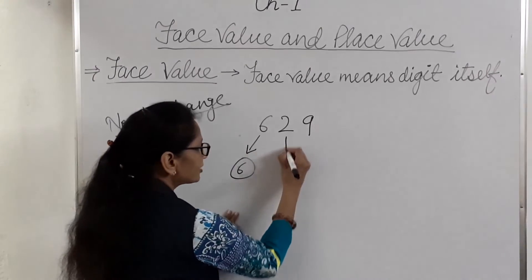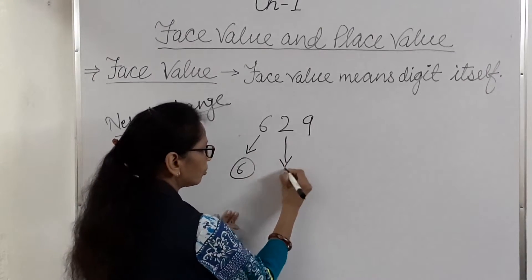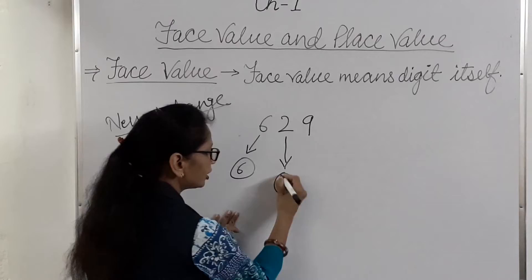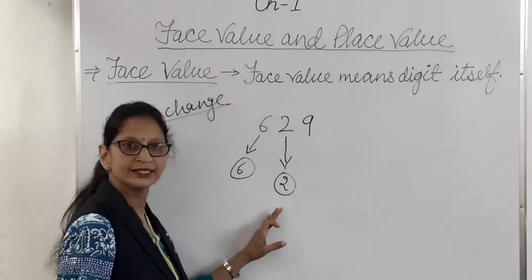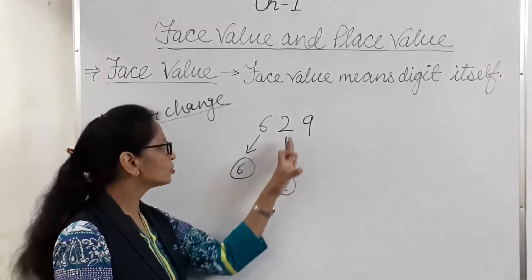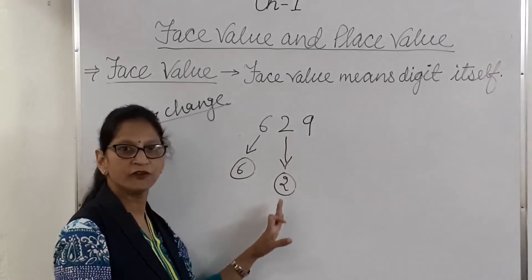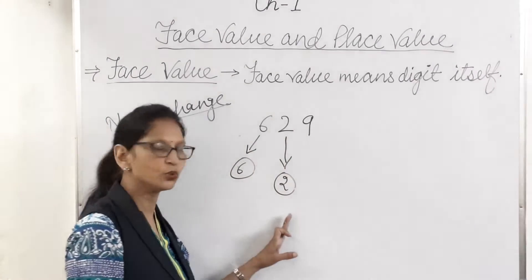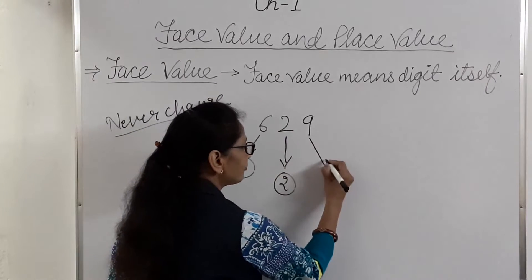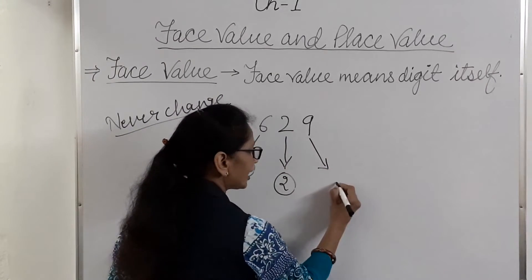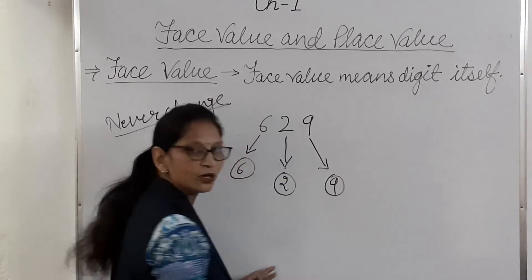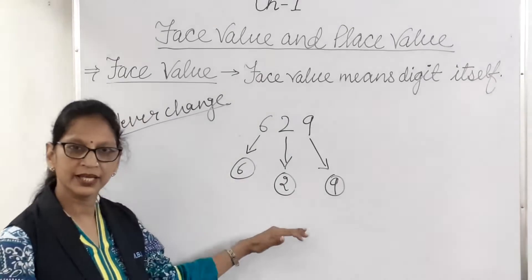Next, what is the face value of 2? Face value of 2 is the digit itself. So face value of 2 is 2. And then what is the face value of 9? Face value of 9 is also 9.